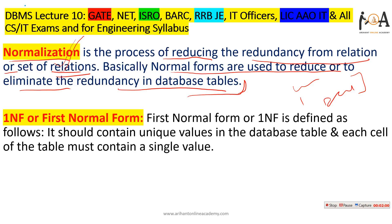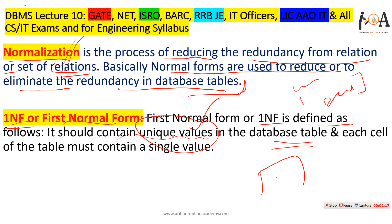We start with 1NF, that is First Normal Form. First Normal Form is defined as follows: the table must contain unique values, and each cell of the table must contain a single value.